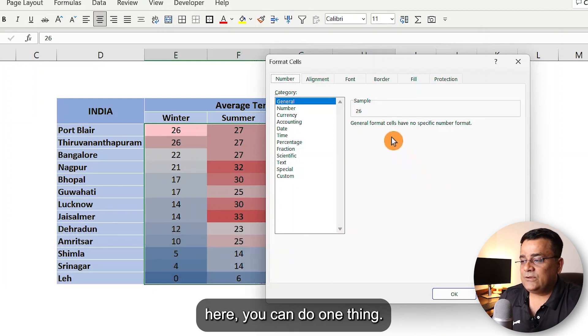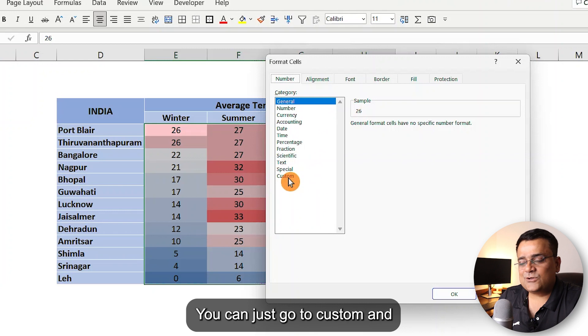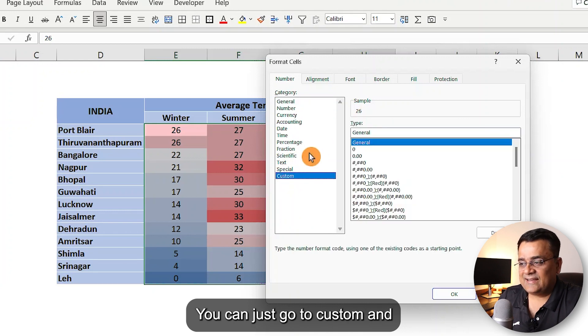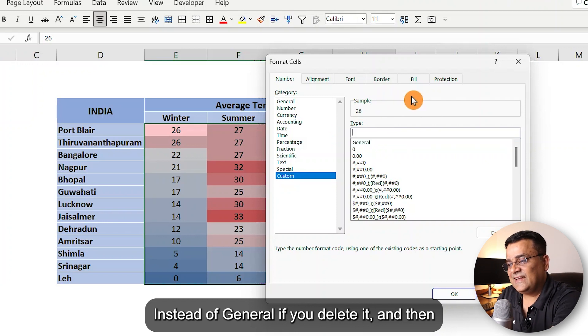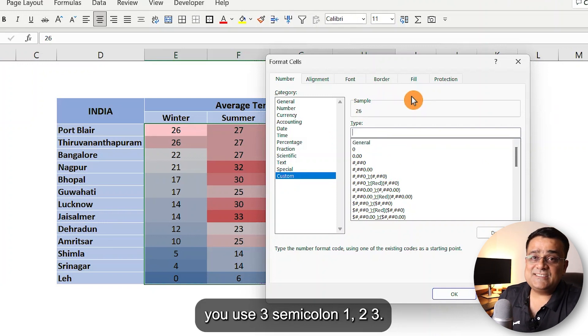Instead of 'general,' if you delete it and then you use three semicolons—one, two, three—and you hit OK, this text will disappear.